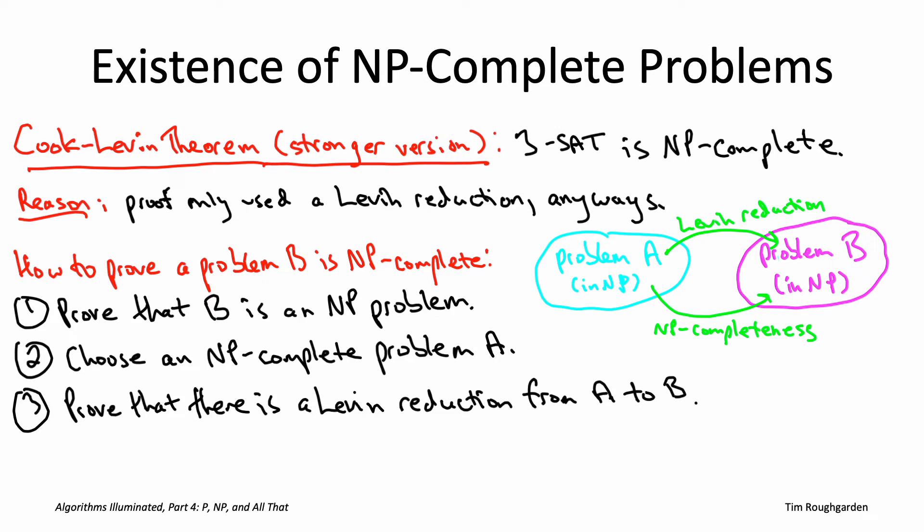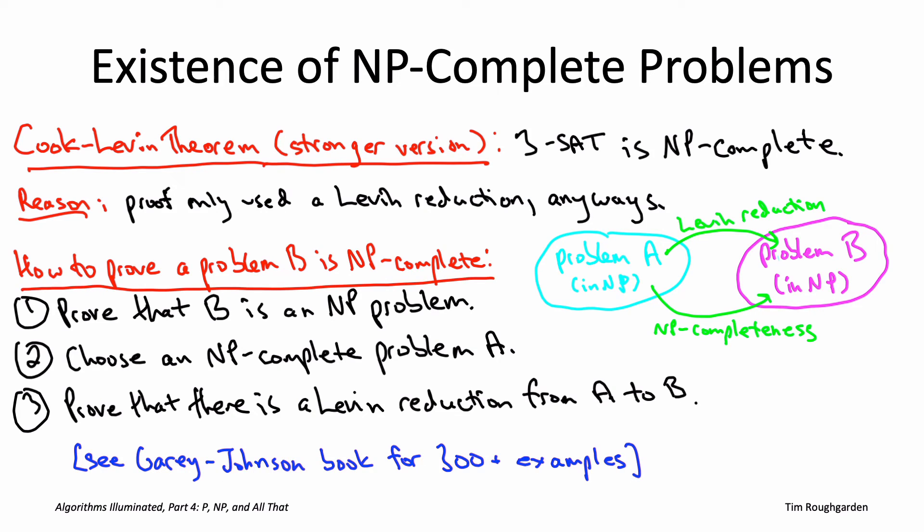This simple three-step recipe has been applied many times over, and as a result we now know that thousands of natural problems are NP-complete, including problems from all across engineering, the life sciences, and the social sciences. For example, the search versions of almost all optimization problems we've discussed — including the TSP, the knapsack, maximum coverage, and minimum makespan — are not just NP-hard, but NP-complete. If that's not enough, check out the classic book by Garey and Johnson for hundreds more examples.